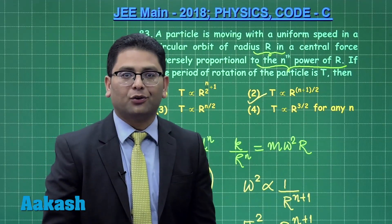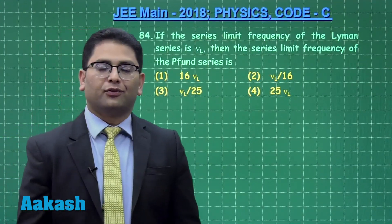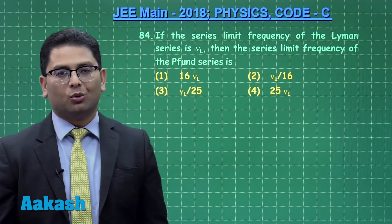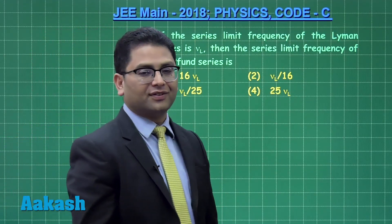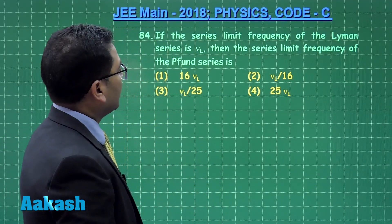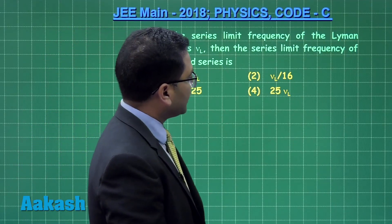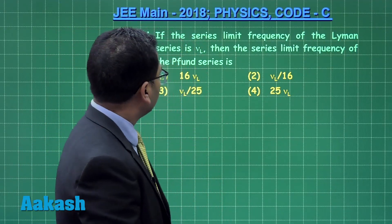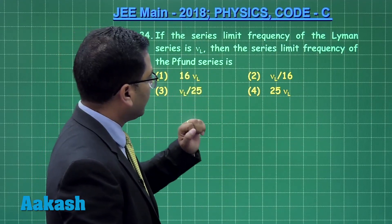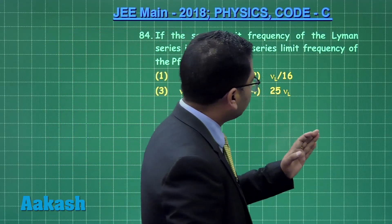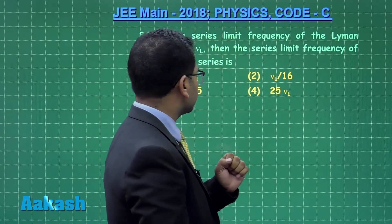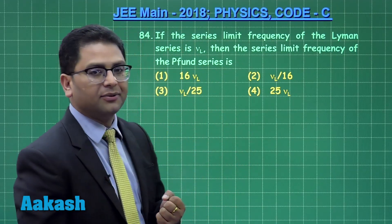Let us go for question number 84. Question number 84 from modern physics. It is raining modern physics in this question paper. If the series of limit frequency of Lyman series is nu sub L, then the series limit frequency of the Pfund series, we need to calculate that value.